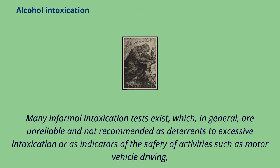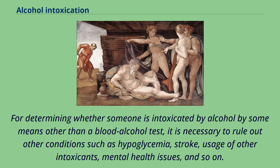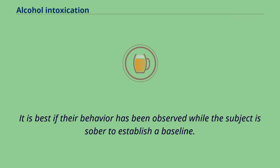Many informal intoxication tests exist, which in general are unreliable and not recommended as deterrents to excessive intoxication or as indicators of the safety of activities such as motor vehicle driving, heavy equipment operation, or machine tool use. For determining whether someone is intoxicated by alcohol by means other than a blood alcohol test, it is necessary to rule out other conditions such as hypoglycemia, stroke, usage of other intoxicants, and mental health issues. It is best if their behavior has been observed while the subject is sober to establish a baseline.